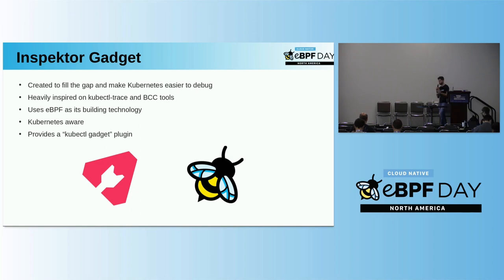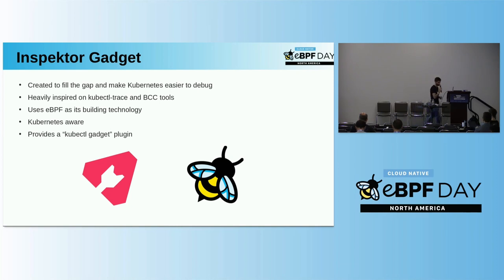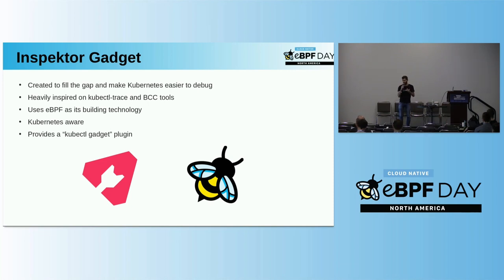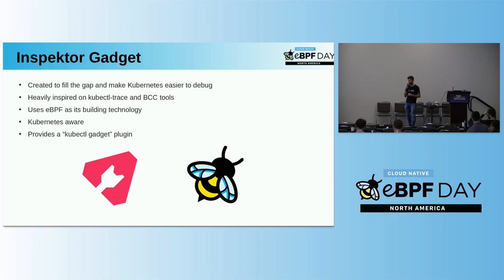Being Kubernetes-aware means we are able to filter events for a given Kubernetes namespace, pod, or whatever, and we also provide Kubernetes information for events we capture on the cluster. Additionally, we provide a kubectl plugin. A user already familiar with kubectl doesn't have to learn a completely new tool — the interface is as aligned as possible to kubectl, including how to filter by namespace and configure the kubeconfig.